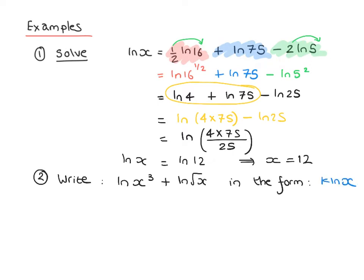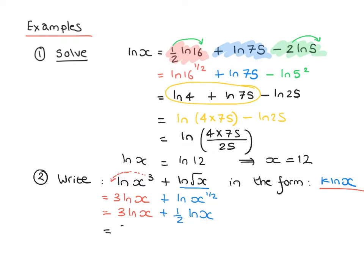For the next example, we write ln of x cubed plus ln of root x in the format k ln x. We move the 3 to the front to get 3 ln x, and rewrite root x as x to the half, giving a half ln x. Adding these together: 3 plus one half equals 7 over 2, so the expression equals 7 over 2 times ln x. Therefore k equals 7 over 2.